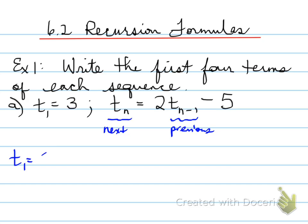So T1 equals 3. T2, the second term, is equal to 2 times T1 minus 5. Well, we know what T1 is, that's 3. So 2 times 3 minus 5 will give us a value of 1.